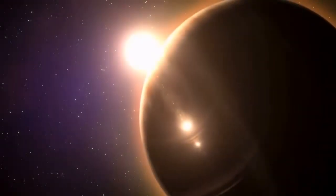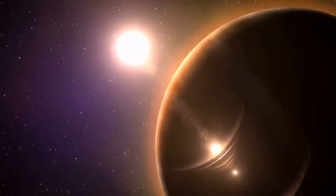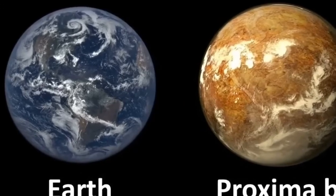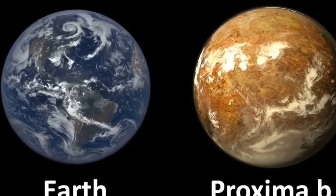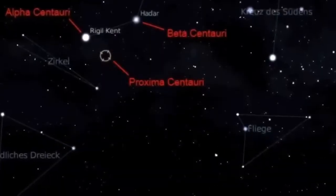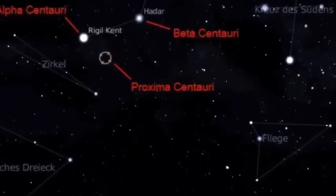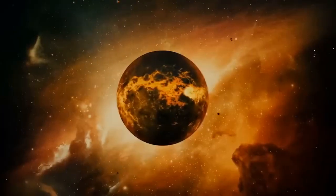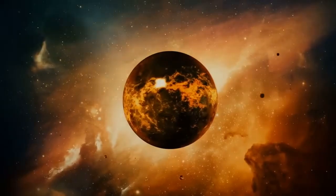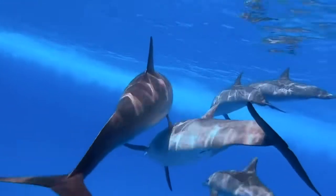Out there in the vast expanse of space lies a mysterious planet that transcends the ordinary space rocks we often encounter. This celestial wonder is none other than Earth's distant cousin, Proxima Centauri b, a mere 4.2 light-years away from our home. Positioned comfortably within the habitable zone of its star, Proxima Centauri, Proxima Centauri b exudes an air of mystery and fascination. The question that captivates the minds of astronomers and space enthusiasts alike is whether this enigmatic planet harbors similarities to our Earth, boasting oceans and teeming with life on its surface.